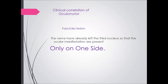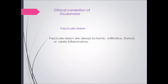A fascicular lesion means the nerve has already left the third nucleus. The ocular manifestations are present only on one side — right fasciculus gives right third nerve palsy, left gives left. Fascicular lesions are always ischemic, infiltrative, tumoral, or rarely inflammatory. Importantly, fascicular lesions are never isolated — there is always another neurological manifestation accompanying them.